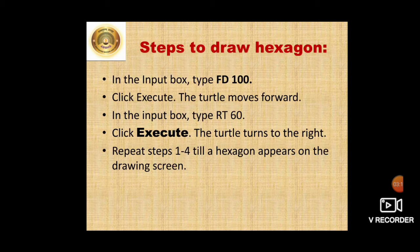Here are the steps to draw a hexagon. In the input box, type FD100, that is forward 100, and click Execute — the turtle moves forward. Next, in the input box, type RT60, that is right 60, and click Execute — the turtle turns to the right. Repeat steps 1 to 4 until a hexagon appears on the drawing screen. These were the steps to draw a hexagon.